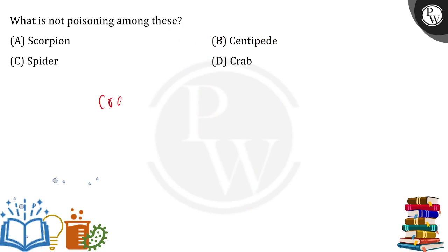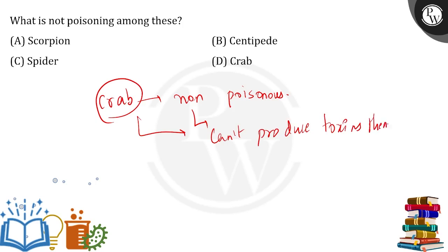So, do you guys know that crab is actually non-poisonous? This is because the crabs can't produce toxins. The crabs can't produce toxins themselves and thereby they are considered as not poisonous.